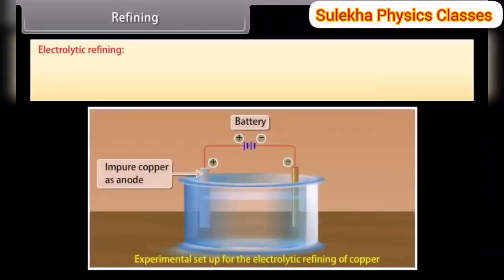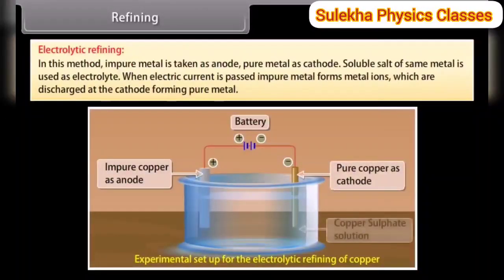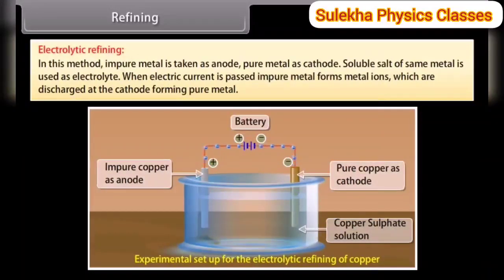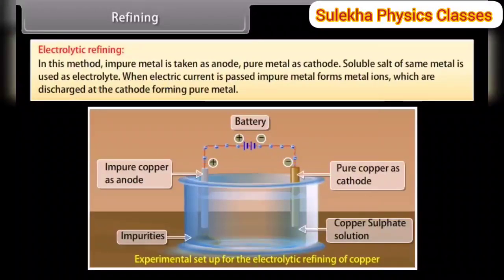Electrolytic refining. In this method, impure metal is taken as anode and pure metal as cathode. A soluble salt of the same metal is used as electrolyte. When electric current is passed, the impure metal forms metal ions which are discharged at the cathode, forming pure metal. For example, copper, zinc and aluminium.